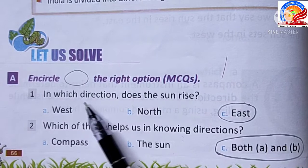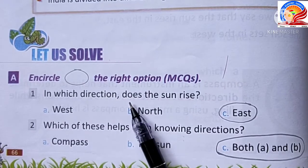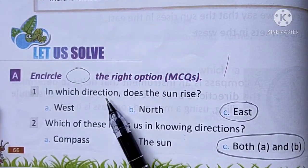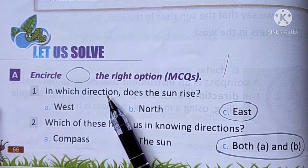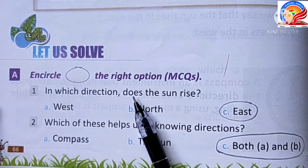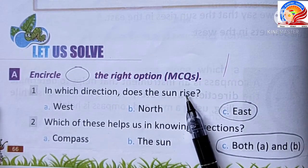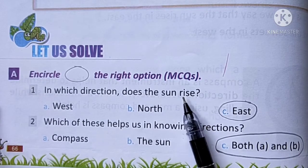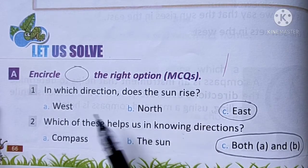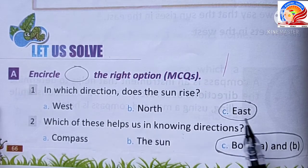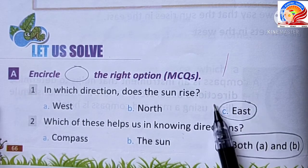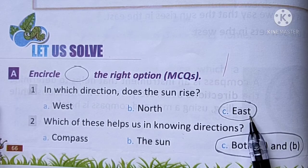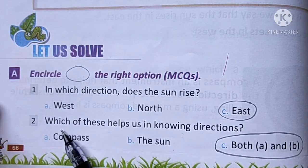In which direction does the sun rise? Options: west, north, east. Sunrise means the sun rising up. The answer is east. The sun rises from the east direction, which is called 'Poorv' in Hindi.